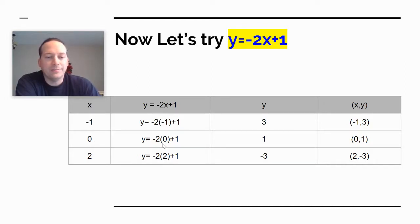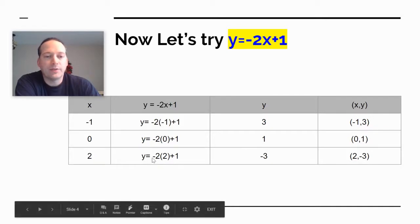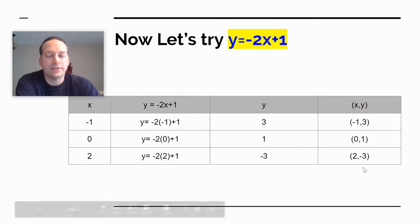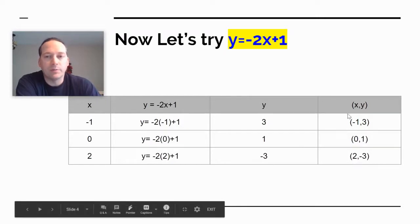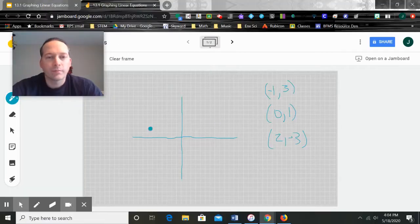So if I plug in a negative one here, so negative two times negative one would be positive two. Positive two plus one is positive three. So when X is negative one, Y is three. Now we come here, if we plug in zero, you can see how easy the multiplication is. Zero plus one is one. So when X is zero, Y is one. And then we come here, if we plug in two, negative two times two is negative four. Negative four plus one is negative three. So two, negative three would be a solution to this equation.